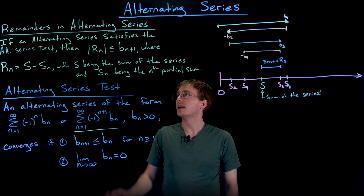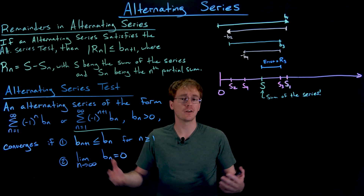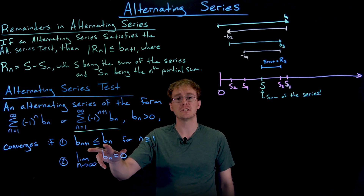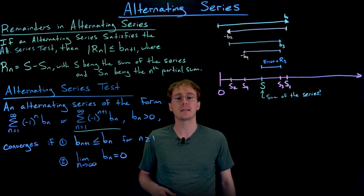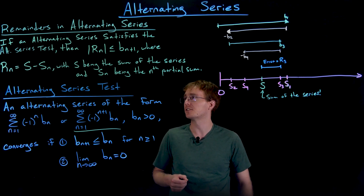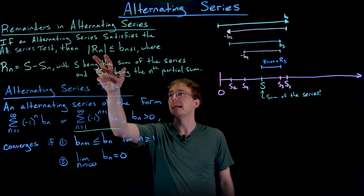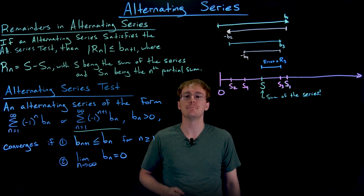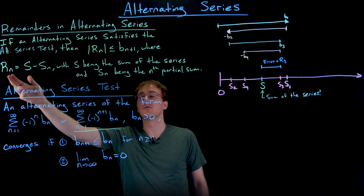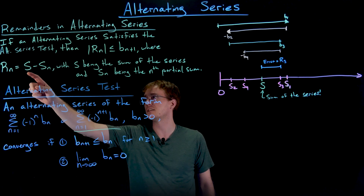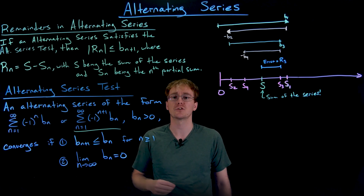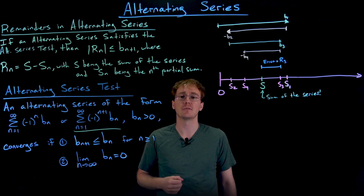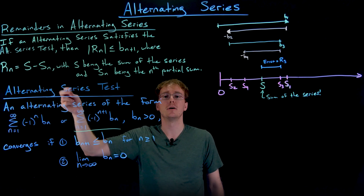Here's a summary of the remainder theorem for alternating series. If an alternating series satisfies the conditions of the alternating series test — terms always decreasing and approaching zero — then the remainder R sub n of the nth partial sum, which equals the total sum S minus the nth partial sum, satisfies |R sub n| is less than b sub n+1, the next term that didn't make it into the partial sum. The remainder is also equivalent to the sum from n plus one to infinity of the series.